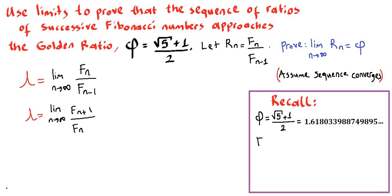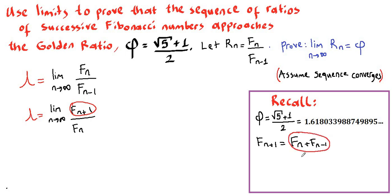Let's recall that each Fibonacci number is given by the sum of the two previous numbers. So f sub n plus 1 equals f sub n plus f sub n minus 1. We can substitute f sub n plus 1 with f sub n plus f sub n minus 1, so our limit will be equal to f sub n plus f sub n minus 1 divided by f sub n.